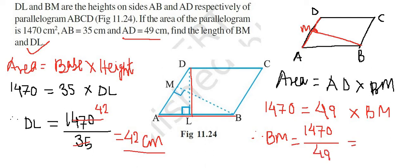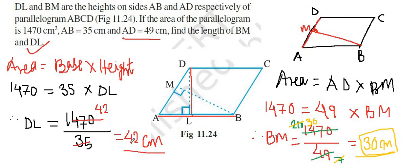Dividing 1470 by 49 gives us 30. So the length of BM is 30 centimeters. Hence, the length of BM is 30 centimeters and the length of DL is 42 centimeters, which are our required answers. Thank you.